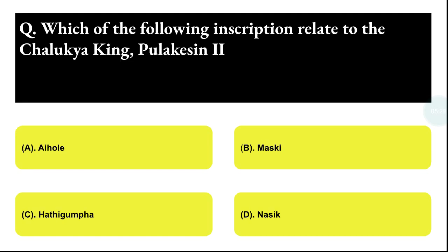Next question: which of the following inscriptions relates to the Chalukyan king Pulakesi II? Option A: Aiholi, Option B: Masqi, Option C: Haddankumba, Option D: Nasik. The correct answer is option A, that is Aiholi.